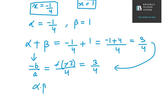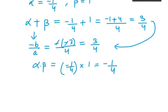Now we have α·β. Alpha dot beta is the product of two numbers, that is minus 1 over 4 into 1, so it will be minus 1 over 4 only.